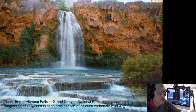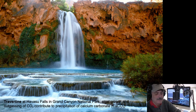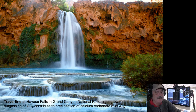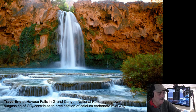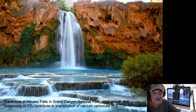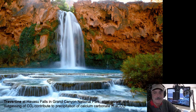The same process happens at cold water springs — here's Havasu Falls in the west end of the Grand Canyon. You get rimstone dams, a lot like being in a cave but above ground. As water falls over the top, it deposits layers of travertine limestone. The same process occurs on a micro scale at each little plunge pool below the main waterfall. It's degassing CO₂ — losing carbon dioxide promotes the precipitation of calcium carbonate.